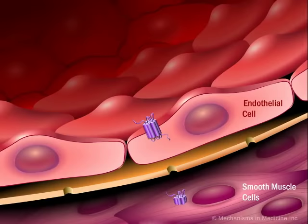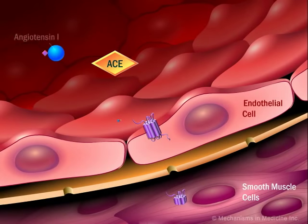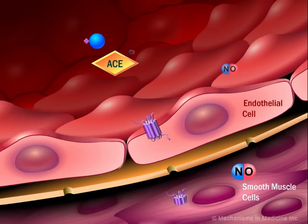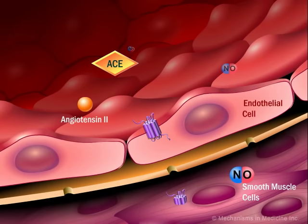The angiotensin-converting enzyme converts the inactive precursor angiotensin-1 into the vasoactive peptide angiotensin-2.